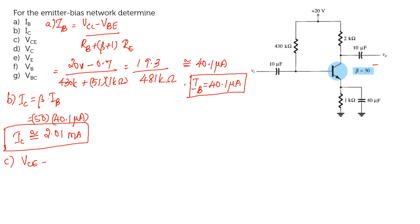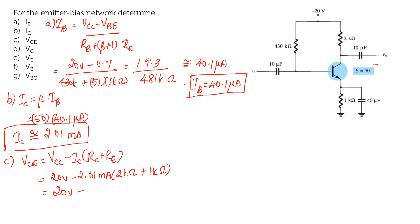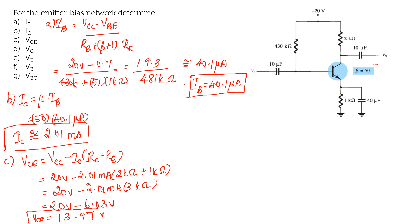Next, finding VCE: VCE = VCC − IC·(RC + RE) = 20 V − 2.01 mA × (2 kΩ + 1 kΩ) = 20 − 2.01 mA × 3 kΩ = 20 − 6.03 = 13.97 V. So VCE = 13.97 V.